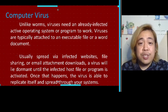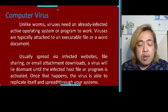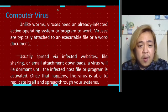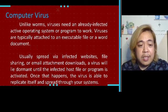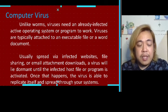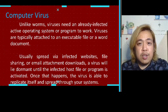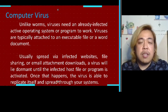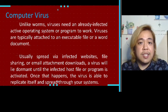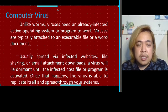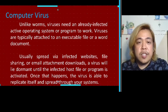Computer virus. Unlike worms, viruses need an already infected active operating system or program to work. Viruses are typically attached to an executable file or a word document, and are usually spread by an infected website, file sharing, or email attachment downloads. The virus lies dormant until the infected host file or program is activated. Once that happens, the virus is able to replicate itself and spread through your system. If your device malfunctions, hangs, or shows a system blackout or not responding, there is a possibility your device is already infected by a virus.